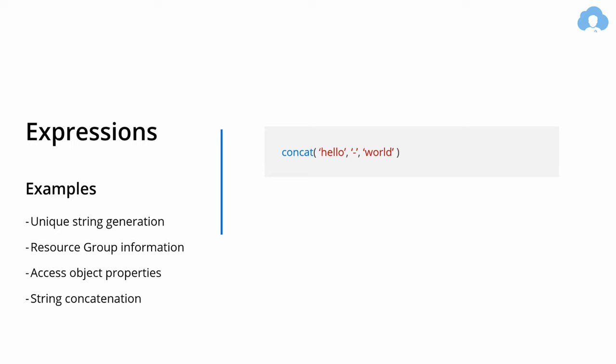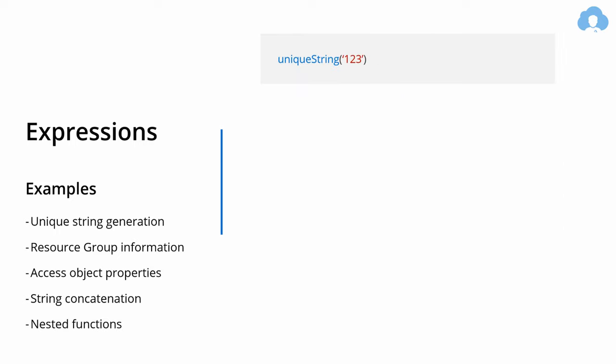Very often during deployment you will find yourself needing to create a dynamic name for your resource and concatenate multiple strings. To do that, you can use the concat function, which grabs multiple parameters and concatenates them into a single string. While there are many more functions, one of the cool things is that you can actually nest functions and use them as parameters to another function.